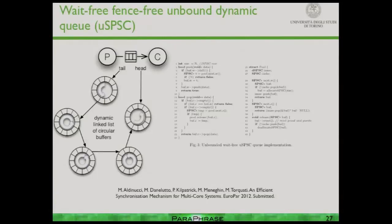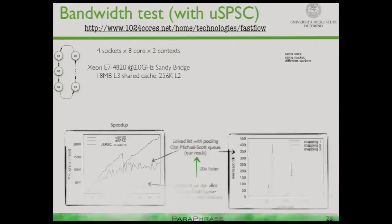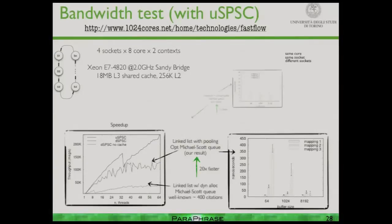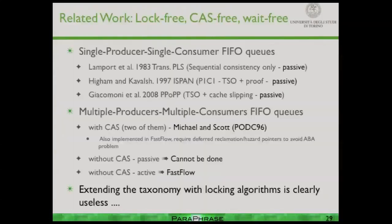This new algorithm is currently submitted — I won't say much more — but we achieved very nearly linear speedup on a 64-core Intel machine. It's also much faster than the reference solution in this field, which is the Michael-Scott queue — a queue with about 400 citations in the literature, so very well-known. Just to summarize this background part: the state-of-the-art queue comparison results are available on the slides offline.